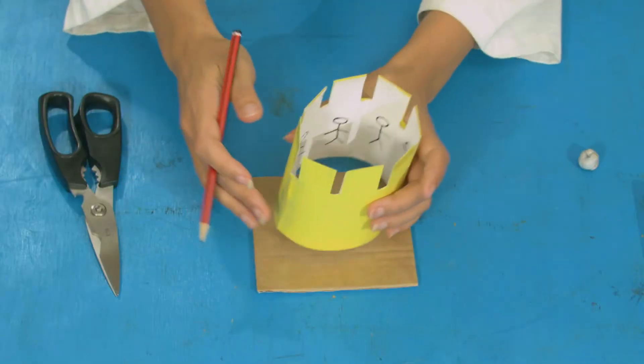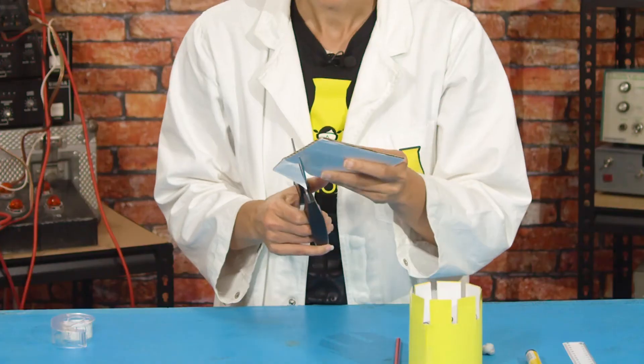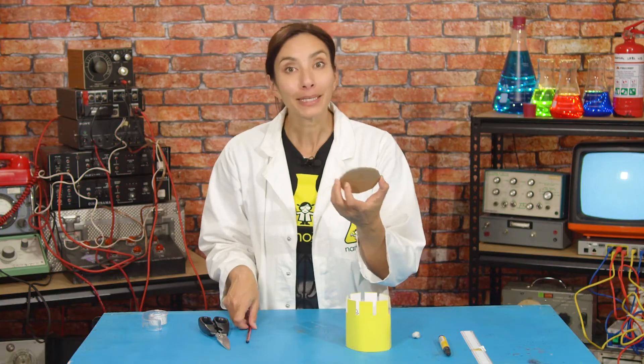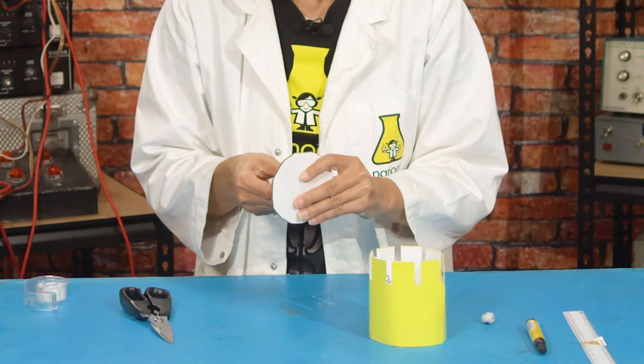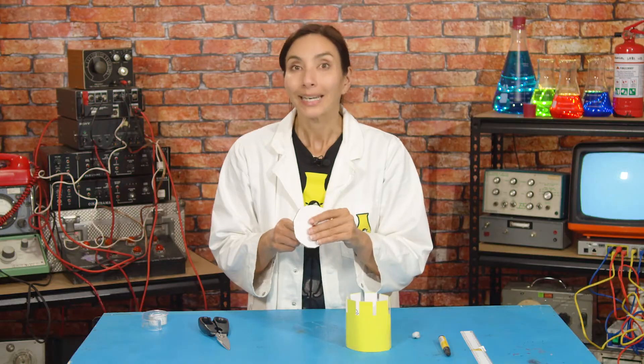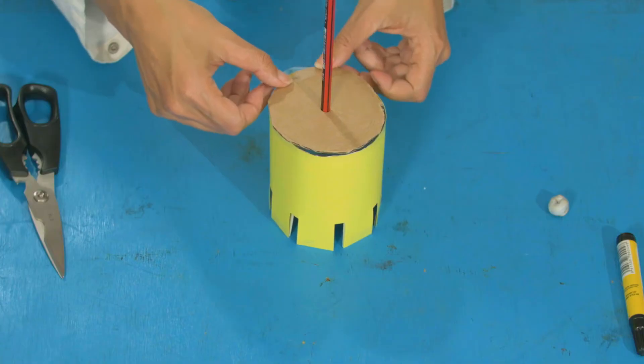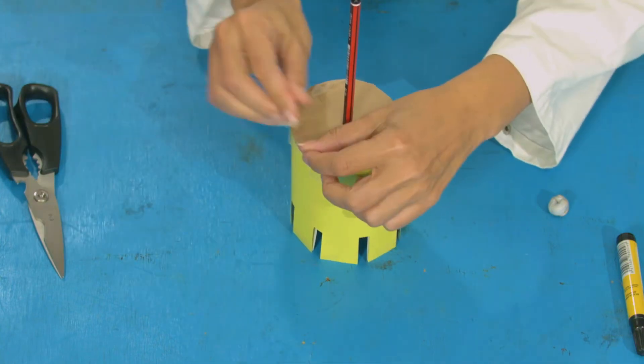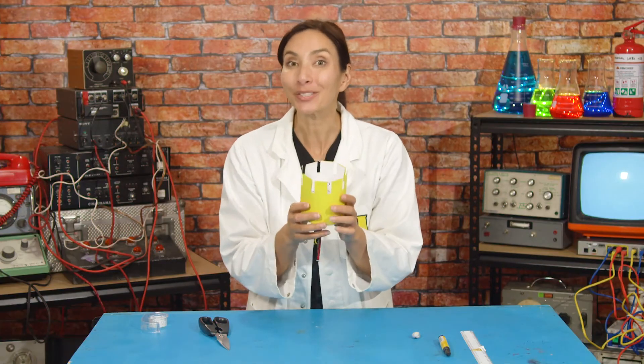Okay, now we want to draw onto our stiff card around the circle shape that we have just made. And then we're going to cut this shape out. Okay, now find the middle of your circle and make a hole using a sharp pencil or some scissors. Now secure the base of this onto your crown shape with a little bit of sticky tape. And there you have it. This is your Zoetrope.